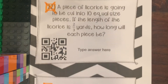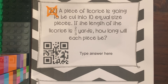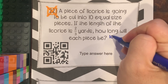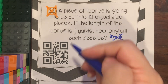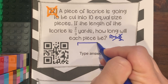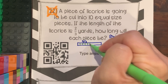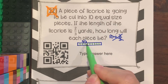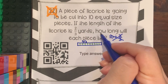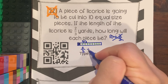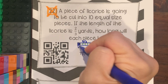Number 22: A piece of licorice is going to be cut into 10 equal-size pieces. If the length of the licorice is 2/3 yards, how long will each piece be? A common mistake is writing 10 divided by 2/3 — that is not the case. What you have is 2/3 yards of licorice, and you want to cut it into 10 equal sizes. So take 2/3 and divide it by 10 over 1. Don't forget KCF.